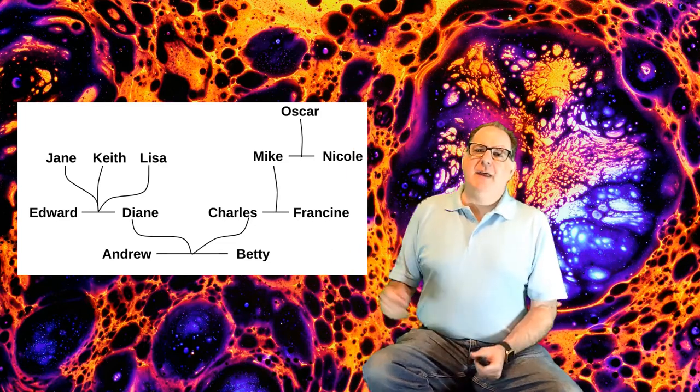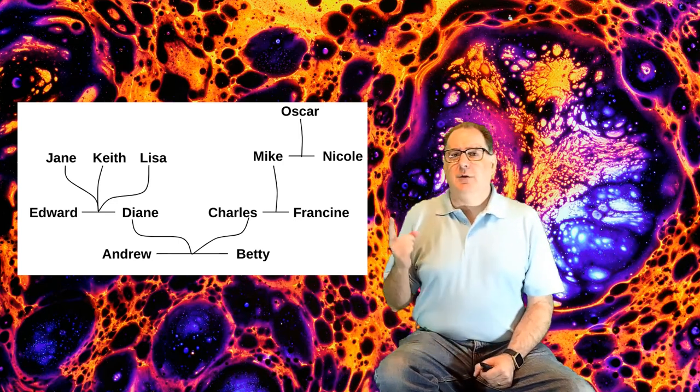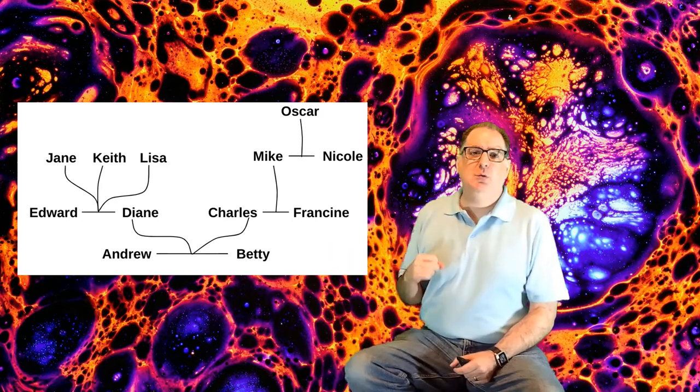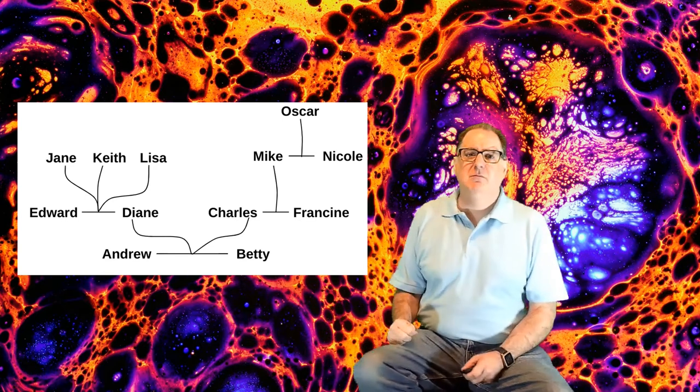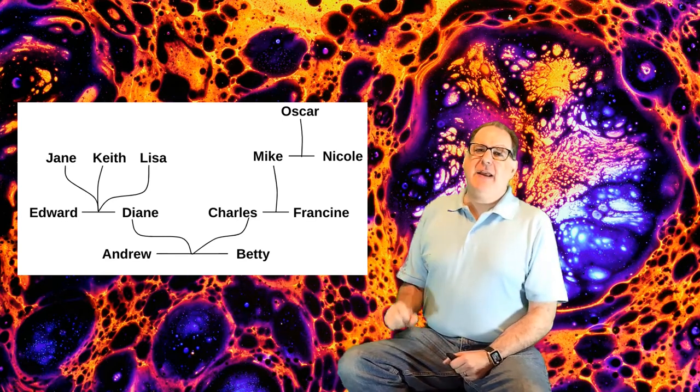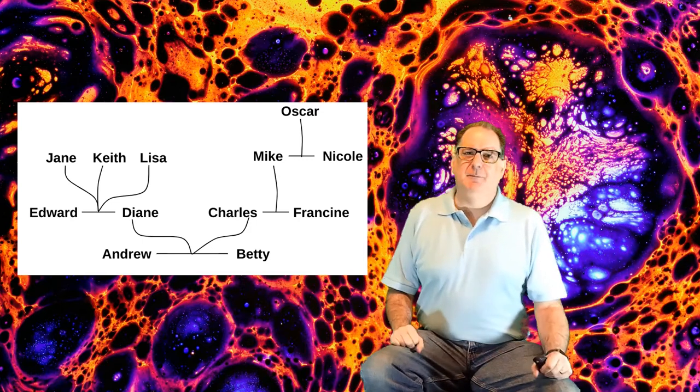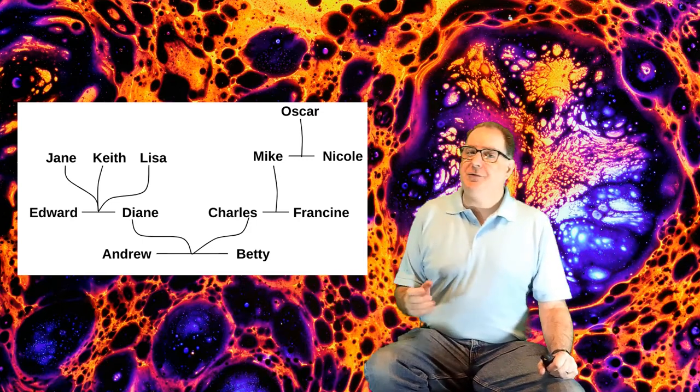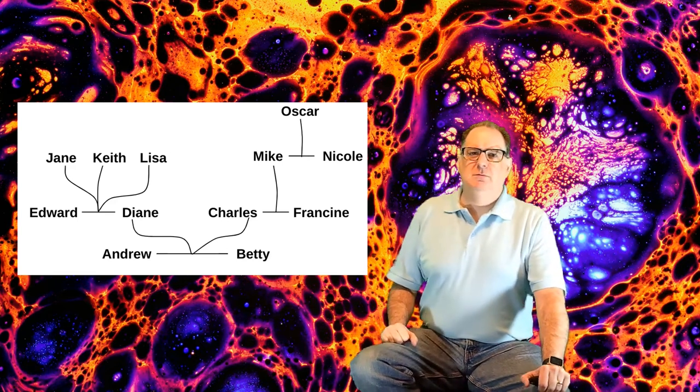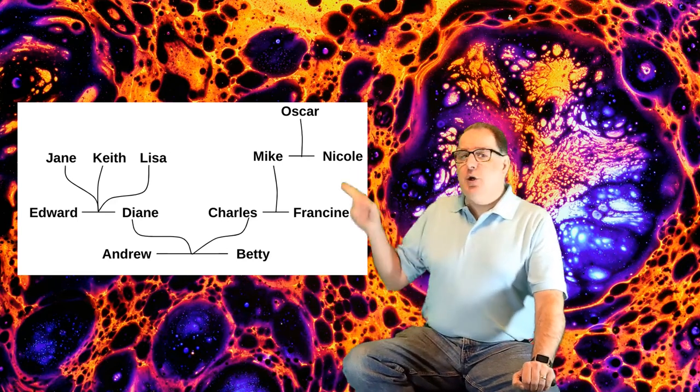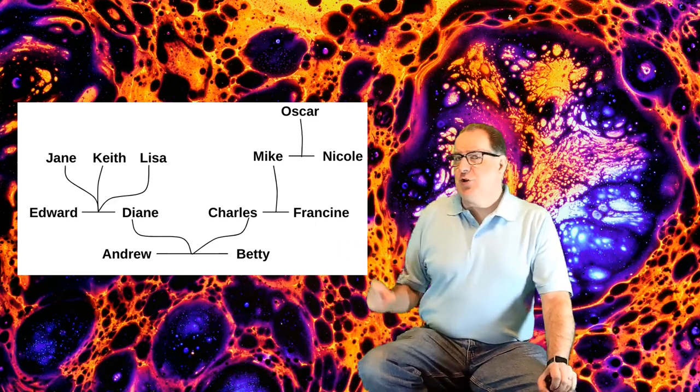What kind of things do family trees show you? Well, they show who's the parent of who, who are siblings, who are cousins. But there are things that family trees like this don't show you very well. Who's male and who's female? What year someone was born? It could be that Oscar is older than Lisa. The chart doesn't tell.